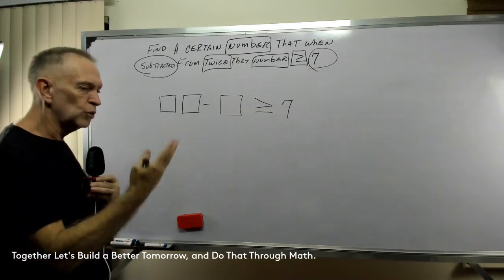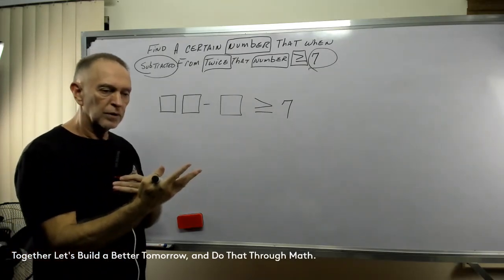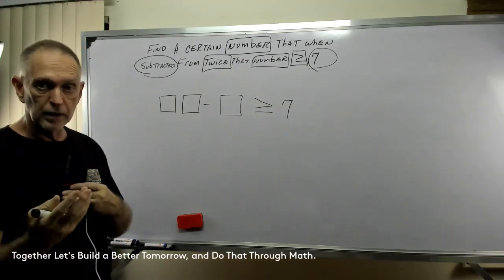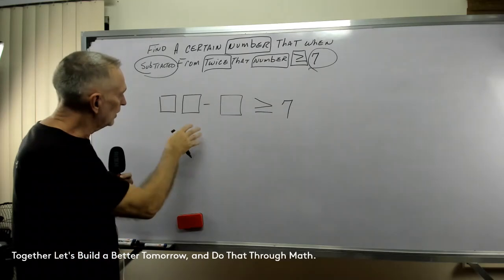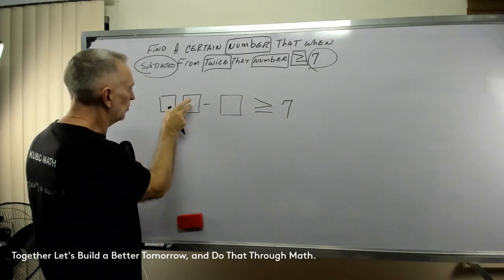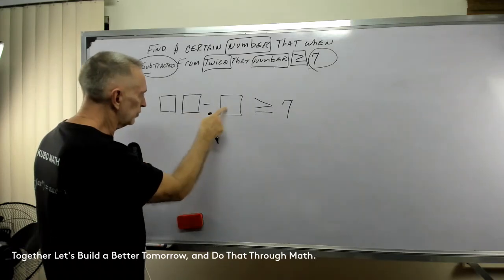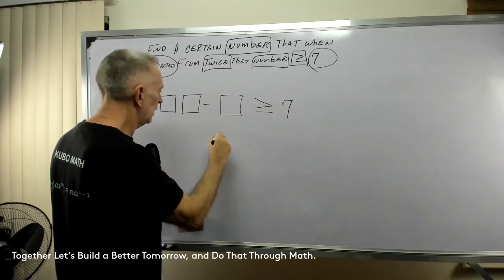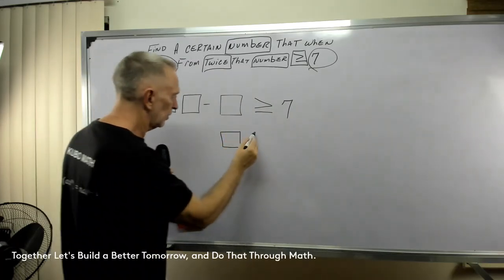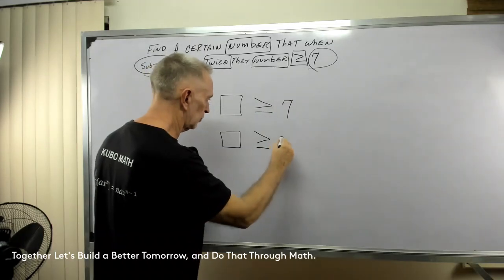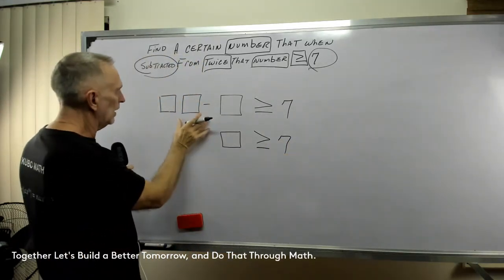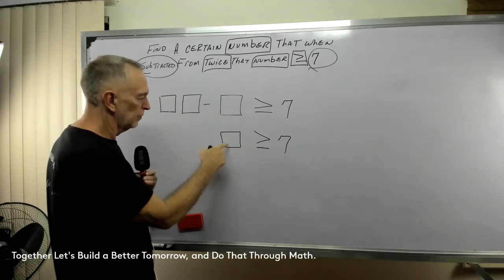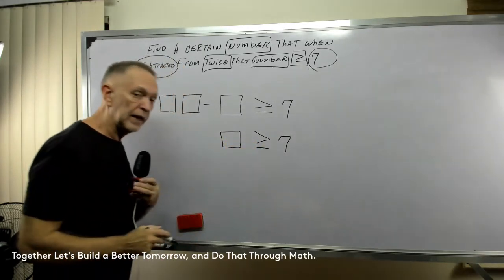Well, if I have two apples, and I'm taking one apple away, I just have one apple. Two minus one is one. So, in this case, I have twice the number, two times the number. So, if I subtract one times the number from it, that leaves me one times the number greater or equal to 7. So, if I have twice the number minus one times the number, it leaves me one times the number. The number is greater than or equal to 7.